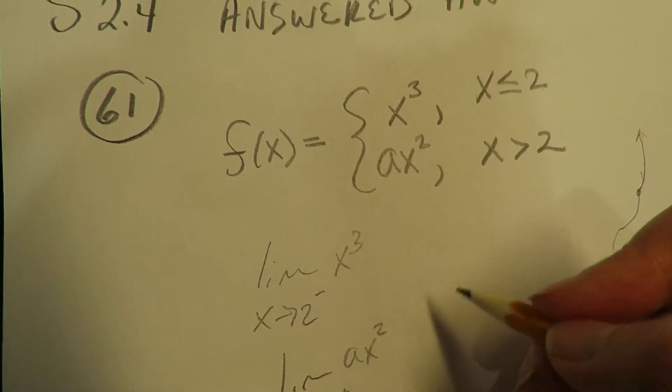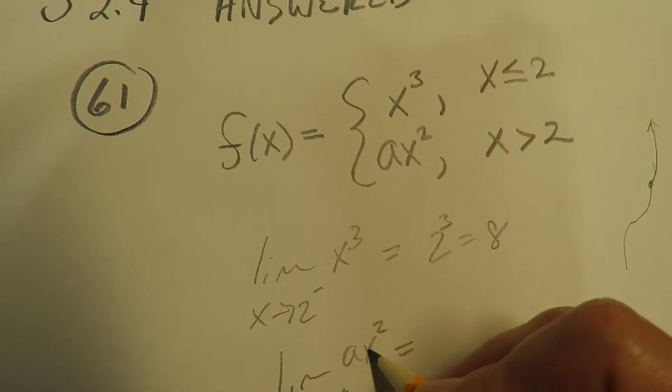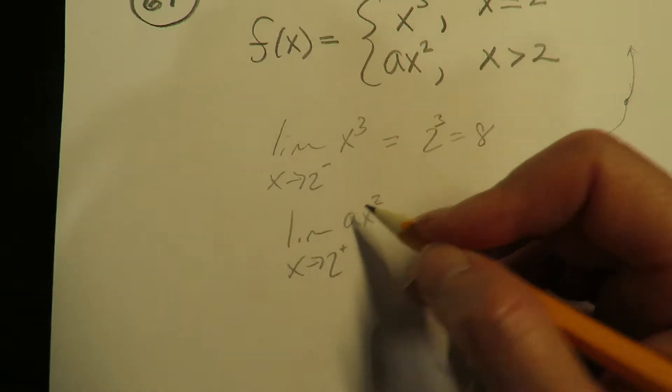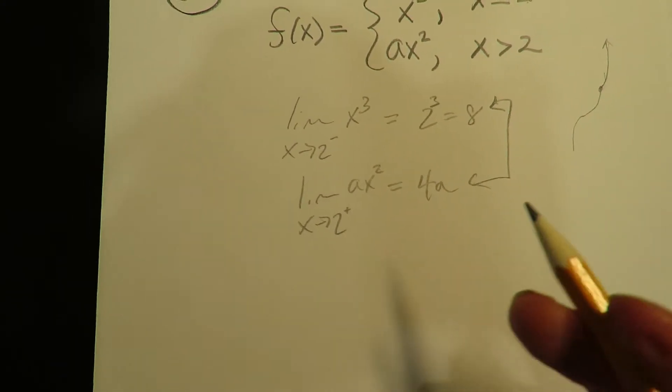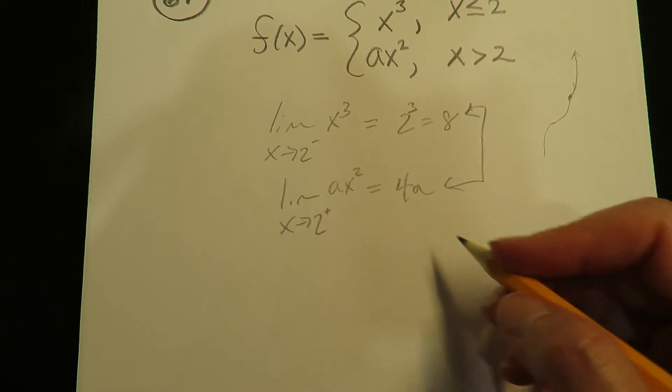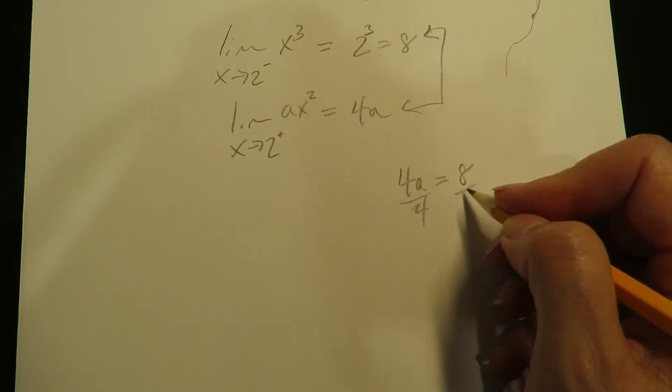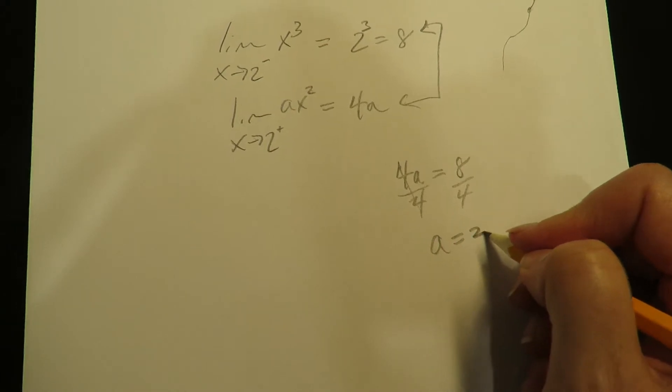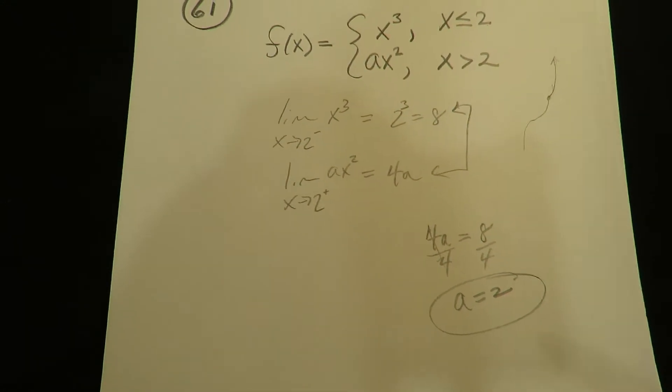...coming in from the right. When you plug 2 in here you get 8. When you plug 2 in here you get 2 squared which is 4, so that's 4a. You have to show that these have to be equal for the function to be continuous, right? So 4a has to equal 8, so a is going to have to be 2.